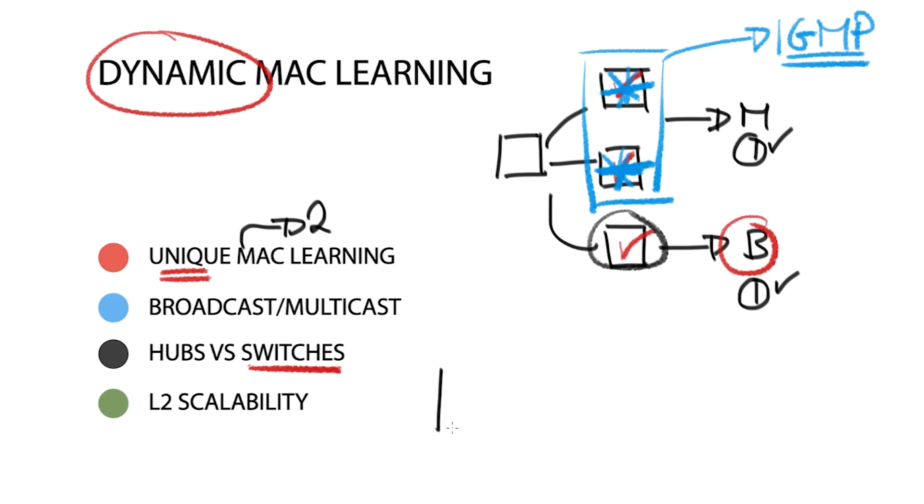Switches maintain a MAC address table that maps individual MAC addresses to physical ports. Once the MAC addresses are mapped to ports, the switch does not need to flood traffic to all ports, as now it knows exactly which port to send traffic to. This is how data packets are forwarded on layer 2 networks based on MAC addresses.